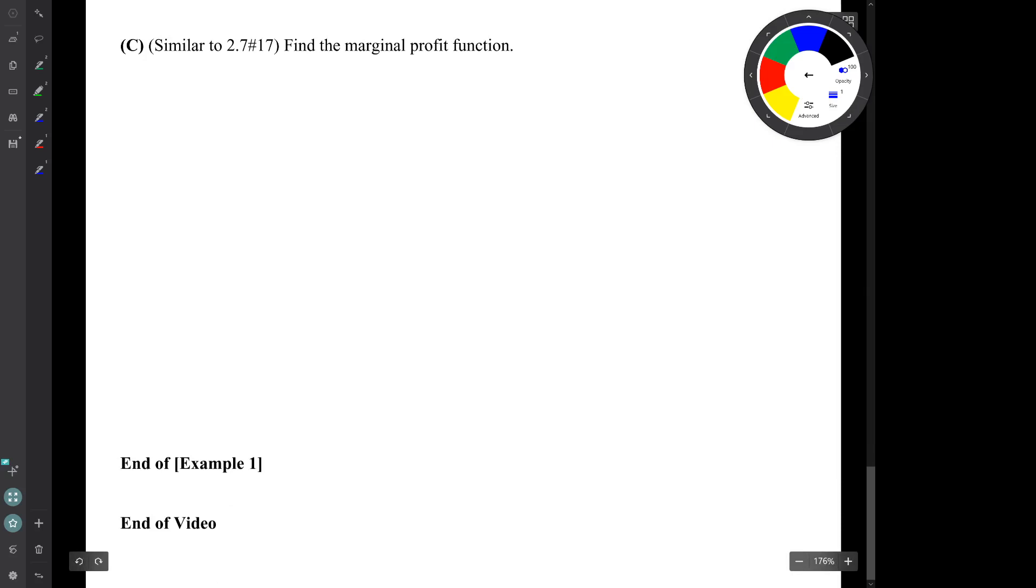Let's go on to the last part. Question C says, find the marginal profit function. Well here, part of what's being tested is whether you can make the connection of what marginal means, but also what profit means. So profit is revenue minus cost. How much money you bring in from the sale of x items, minus how much it costs you to manufacture those x items. So in function notation.